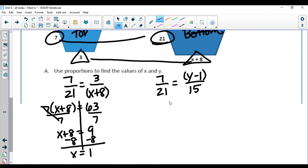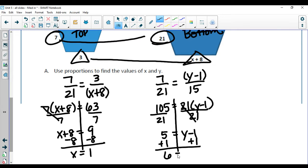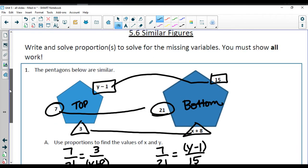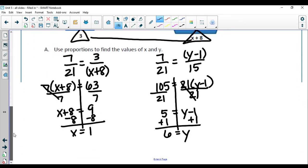Again over here, put my expression in parentheses. I have 105 equals 21 times parentheses y minus 1. Since 105 is by itself, we divide by 21, and that gives me 5 equals y minus 1. Add 1 on both sides, and that gives me 6 equals y for this first part here. So I just found x and I found y.